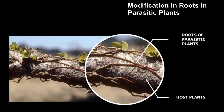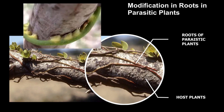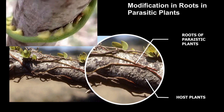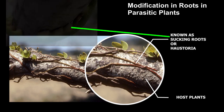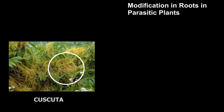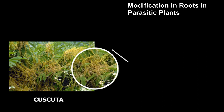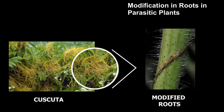Modified roots of parasitic plants penetrate into the tissues of the host plant and suck out the nutrients. Such roots are called haustorium, or sucking roots. Cuscuta is a parasitic plant which has roots modified into sucking roots.